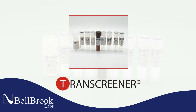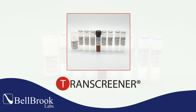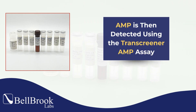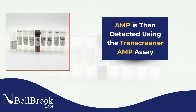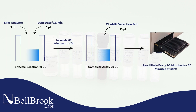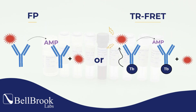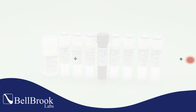To address this unmet need, we developed our Transcreener OA-ADPR SIRT Assay Kit. This kit is a generic activity assay for SIRTs based on enzymatic conversion of O-acetyl-ADP ribose to AMP in real-time before it degrades. The AMP is then detected using the Transcreener AMP assay. The assay is homogenous with a simple mix-and-read protocol that is easy to integrate into HTS workflows. It allows quantitative measurement of SIRT enzymatic activity with an FP or TR-FRET readout.